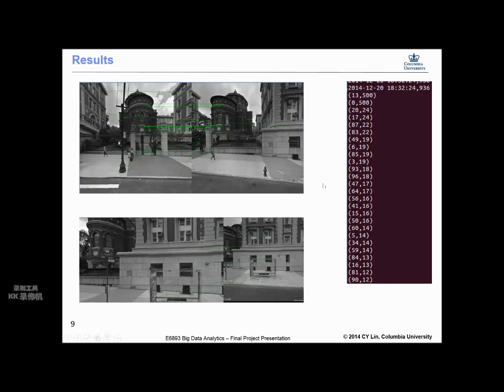Most of them are good matches, for example, the line under the window here. They show exactly the same location in different images, while a few of them are not good due to the change of the viewpoint, for example. But in general, the matching is good enough to find the right answer.